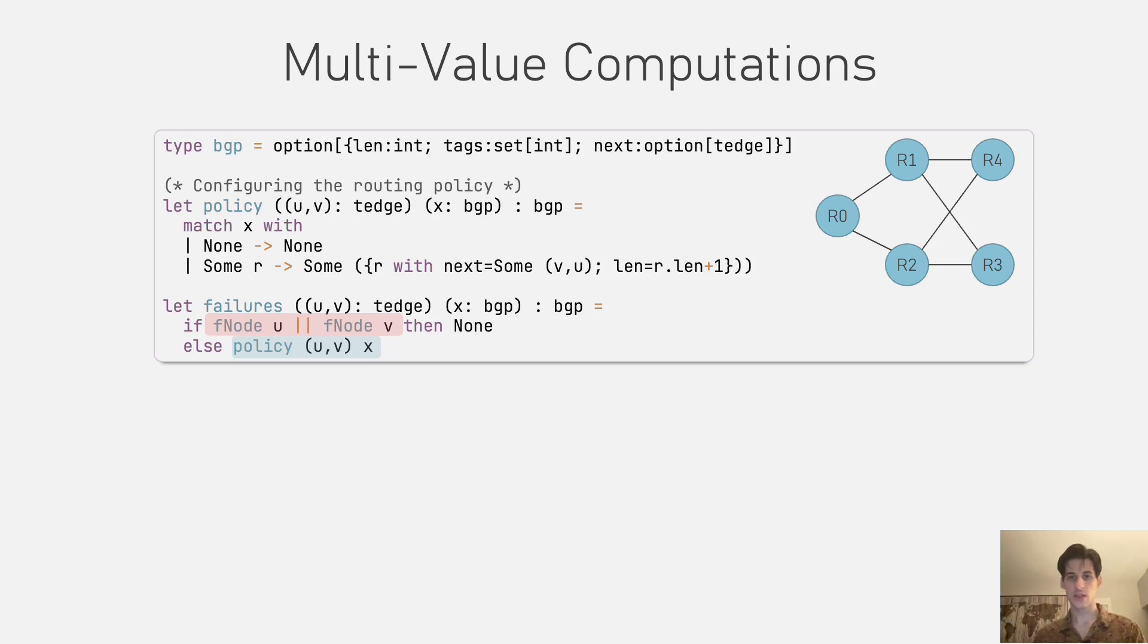In this case, we don't want to interpret it as symbolic because then we'll be computing everything over BDDs, which is slow. And we can't really use a concrete computation because there is a symbolic computation in there.